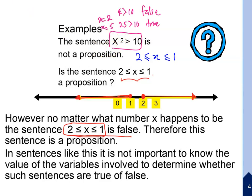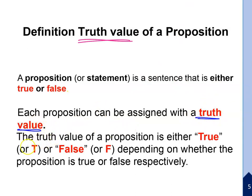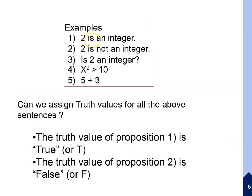This is the definition of the truth value of a proposition. A proposition or statement is a sentence that is either true or false. Each proposition can be assigned a truth value. The truth value of a proposition is either true or false, depending on whether the proposition is true or false respectively.